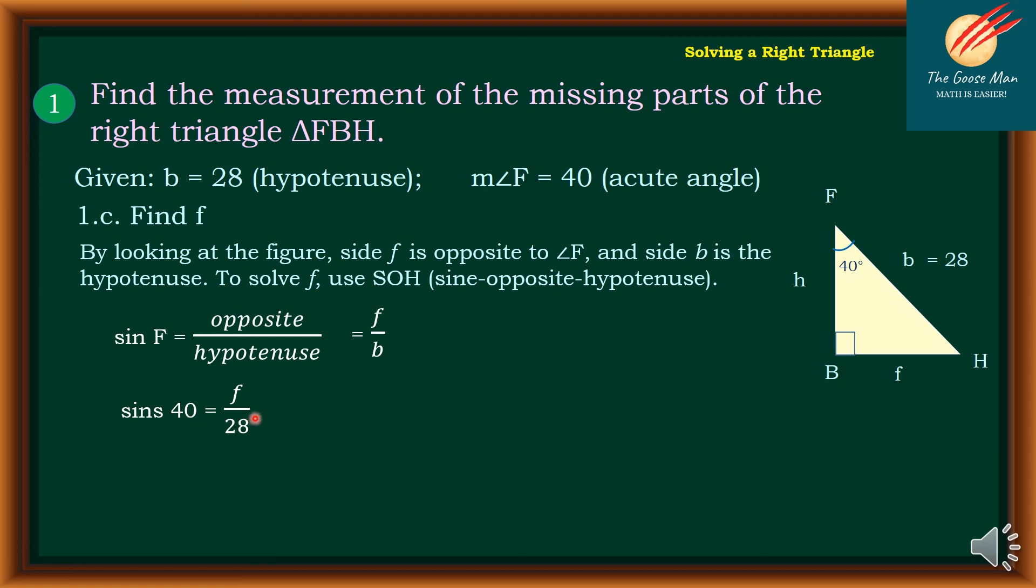If I multiply both sides of the equation by 28, I'll come up with f equals 28 sine 40 degrees. Using your scientific calculator, simply press 28 times sine 40 degrees, press equal sign. So we'll come up with f equals 18 units.